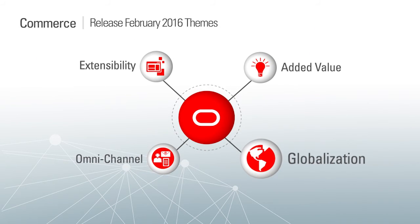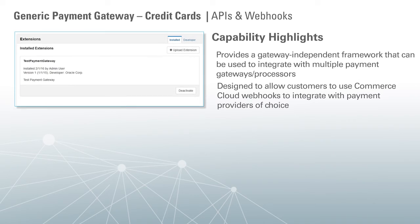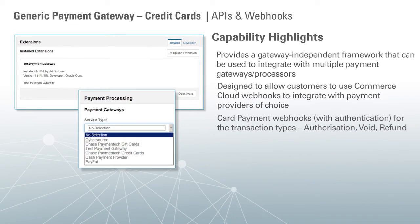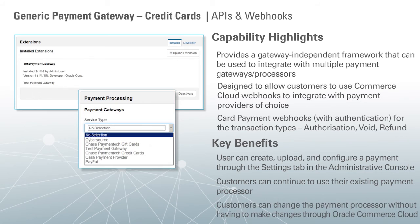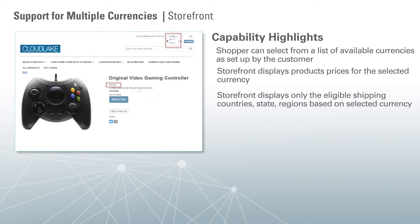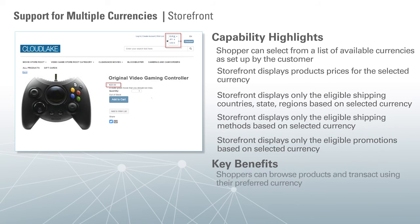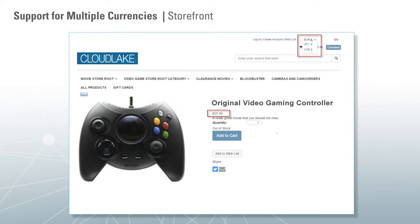Around the theme of globalization, we now provide a gateway independent framework that can be used to integrate with multiple payment gateways and processors. This is designed to allow customers to use Commerce Cloud webhooks to integrate with payment providers of their choice using card payment webhooks with authentication for the transaction types authorization, void, and refund. The new payment gateway also allows our international customers to use their local providers. We are also supporting international customers with support for multiple currencies — the shopper can select from a list of available currencies as set up by the merchant, and the storefront displays products and prices for the selected currency, showing only eligible shipping countries, states, and regions. Shipping methods and eligible promotions will also update based on the selected currency.